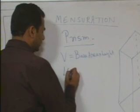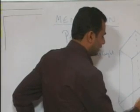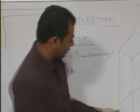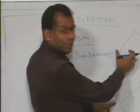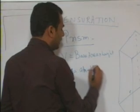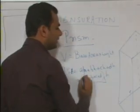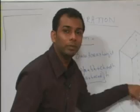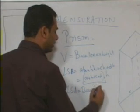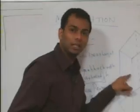For lateral surface area, looking at the rectangular prism: how many faces are there? Four faces, because the base is rectangular. If the side lengths are A, B, C, and D, the area of each face is A×H, B×H, C×H, and D×H respectively. So the total lateral surface area is AH + BH + CH + DH, which equals (A + B + C + D) × H. And A + B + C + D is nothing but the perimeter. So always remember: the lateral surface area for any prism is the base perimeter into height.